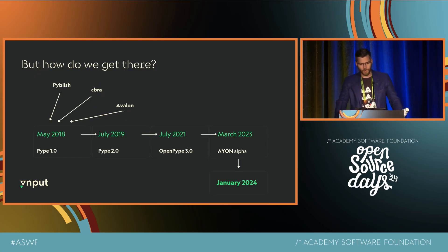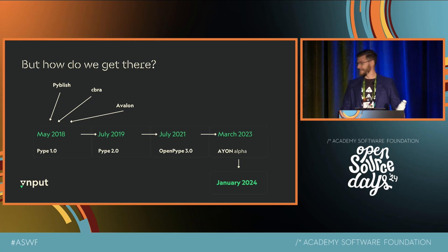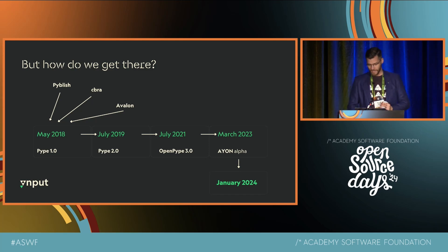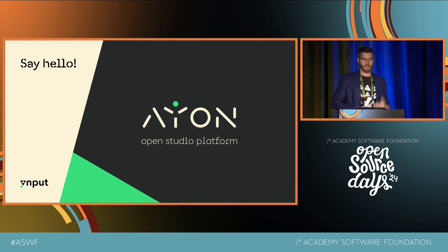We've been at it for a while. We've gone through a few iterations of the software over the past five years. As you can see, we are keeping up with industry standards of changing product names roughly every couple of years. Nevertheless, in January this year, under a completely new rewritten architecture that took us almost two years in the making, we released Ion Open Studio Platform. For those with some historical knowledge, it used to be called Pipe, then OpenPipe, now it's Ion. We won't change it for another two years, I promise.